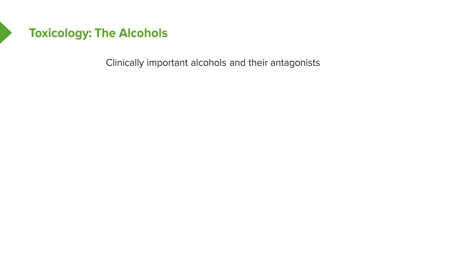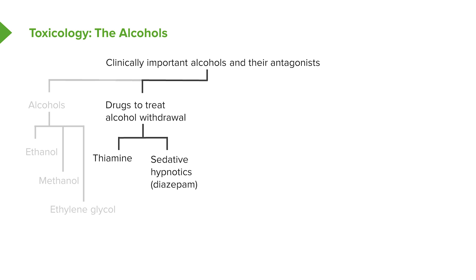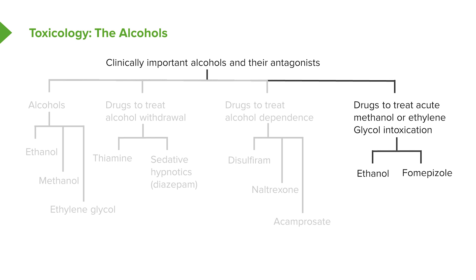We have several clinically important alcohols and their antagonists. The most important ones are ethanol, methanol, and ethylene glycol. We use some drugs to treat alcohol withdrawal — thiamine and sedative hypnotics such as diazepam. We use alcohol dependence drugs like disulfiram and naltrexone. And finally, we treat acute methanol or ethylene glycol intoxication with drugs like ethanol or fomepizole.